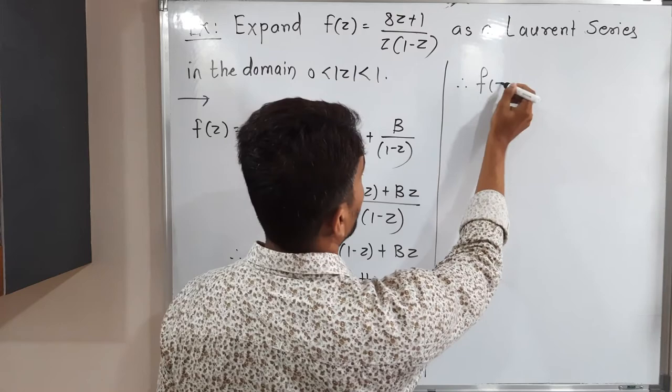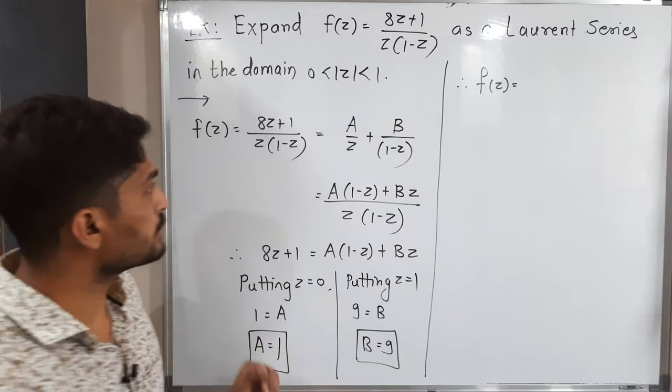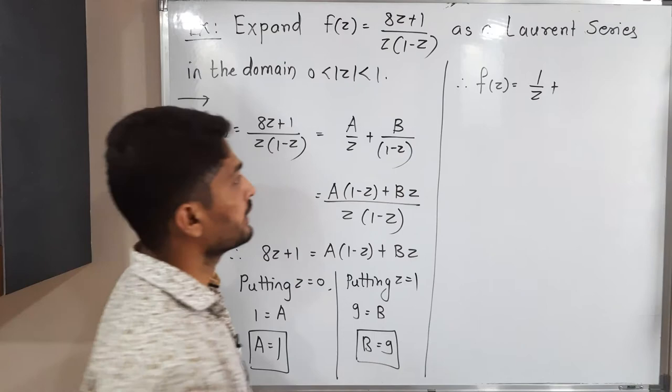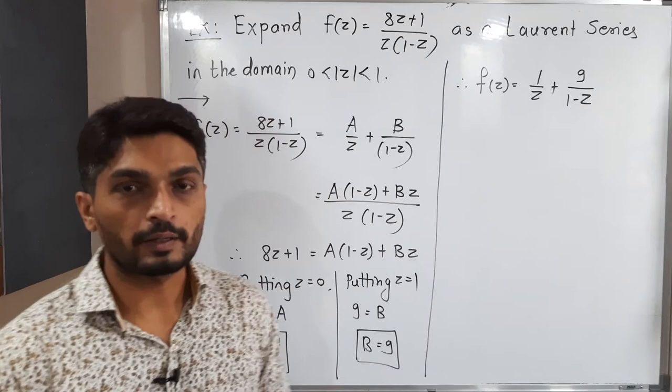Therefore, now our f of z will be, we have already written a upon, a means 1 upon z, plus b. What is our b? 9. So 9 upon 1 minus z. So this is our f of z.